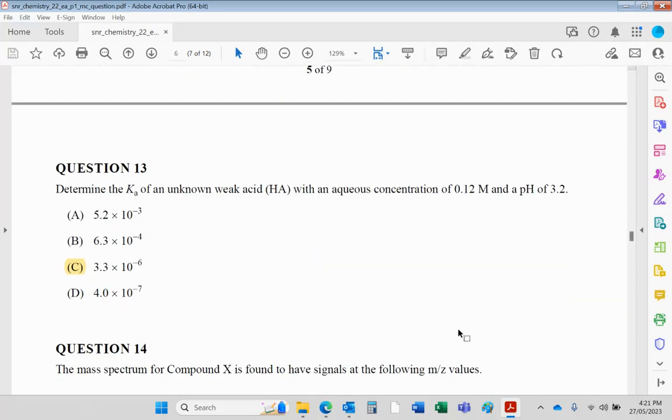The Ka for an unknown weak acid with an aqueous concentration of 0.12 and a pH of 3.2. Again, I don't think this is a suitable multiple choice question because it involves several steps. The Ka would be [H+] times [A−] over [HA]. We're given the concentration of HA as 0.12, and then on the top, the H+ concentration will be 10 to the minus 3.2, and the A− of course will be exactly the same because it's one to one. So 10 to the minus 3.2 squared divided by 0.12 is equal to answer C.